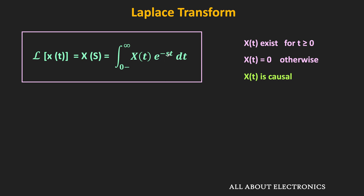In this expression, s is the complex frequency, given as σ + jω, where σ is the real part of s and ω is the imaginary part. The unit of s is second inverse, or we can say it has the unit of frequency.